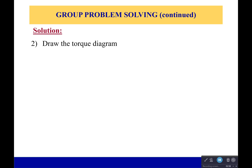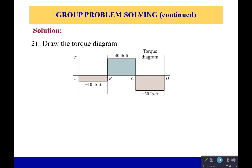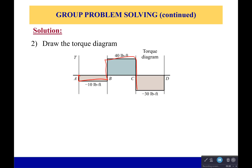Now knowing that, we can draw our torque diagram. It's down to negative 10, we go over up to 40, go over, we drop down to negative 30, and then we come back up. We see jumps of 10, 50, 70, and 30, if you look at the magnitudes of the torques being applied. Rather than doing all these equations, you could just start at one side knowing it's zero and add the torques as you go along to get this diagram.